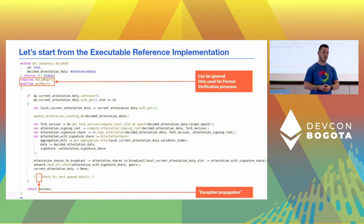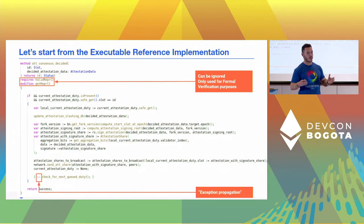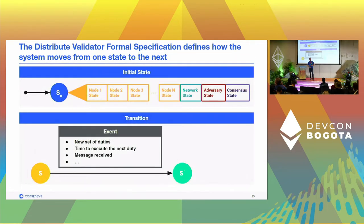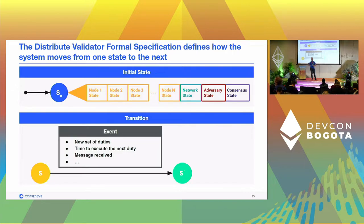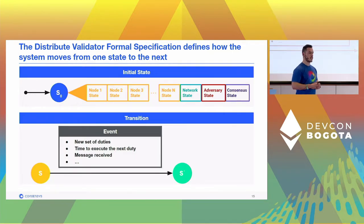We chose Dafny for this project to make it as easy as possible for the developer community to use this protocol. Now let's go up and look at how the actual specification looks. The specification defines how the system transitions from one state to the next. The system state includes the state of all the various nodes, the state of the network, the state of the adversary, and the state of the consensus — all encapsulated in different fields of the system state.